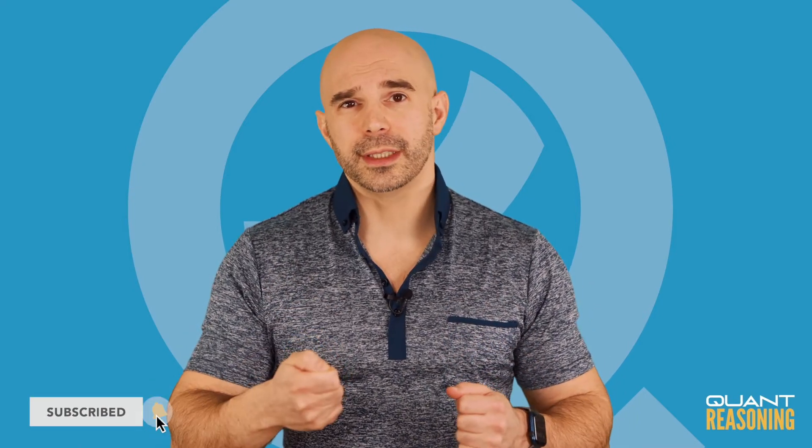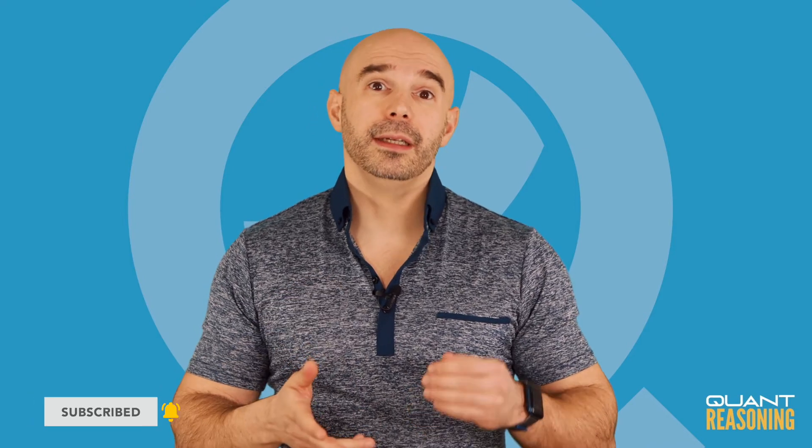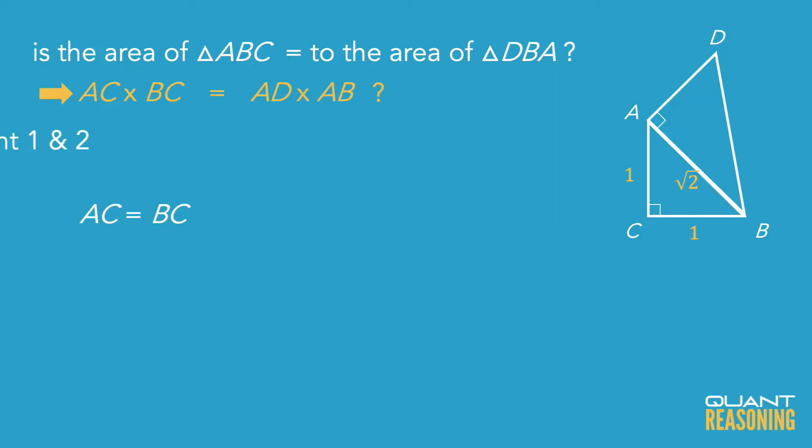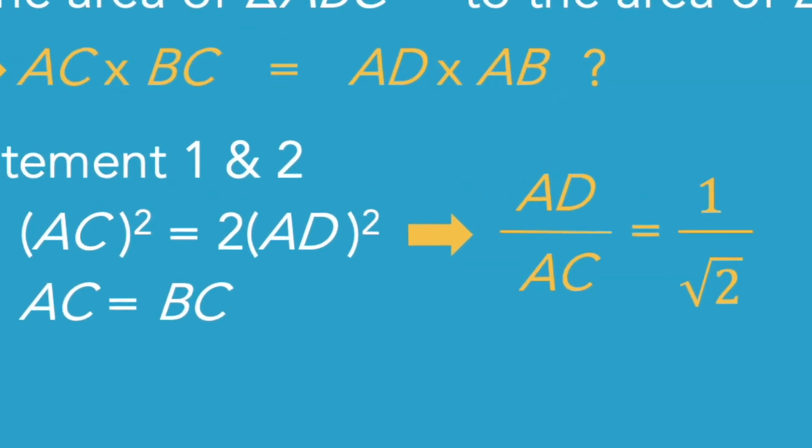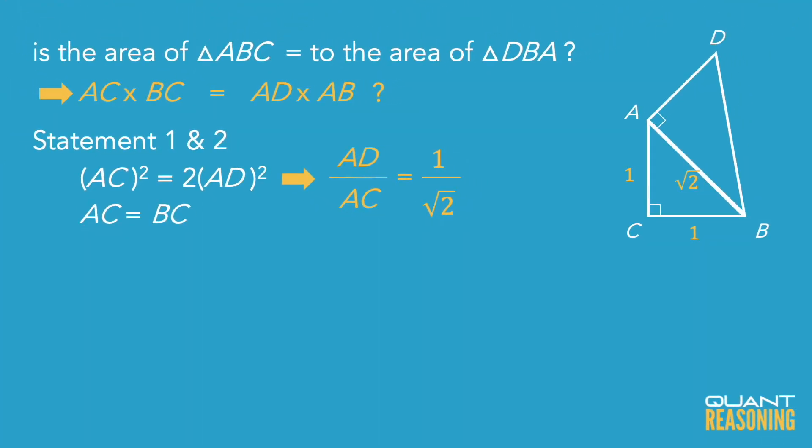Now here's what we can do when we have both statements combined. Remember that ratio from statement 2 where I introduced an inference column, so we had AC to BC to AB is 1 to 1 to square root of 2. Well, we also know from statement 1 that AD to AC is 1 to square root of 2. Now, it's a bit annoying because I have two different numbers representing AC. For the purposes of data sufficiency, I can stop here and say, look, I could consolidate these ratios if I wanted to, and therefore I would be able to answer the question, and this is sufficient, and I can go ahead and pick C and move on to the next question.